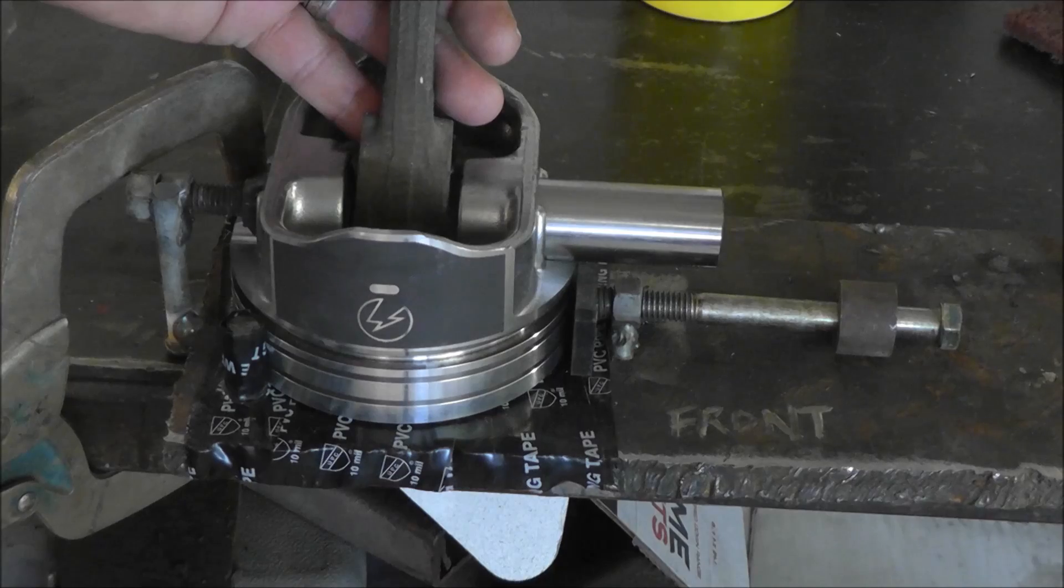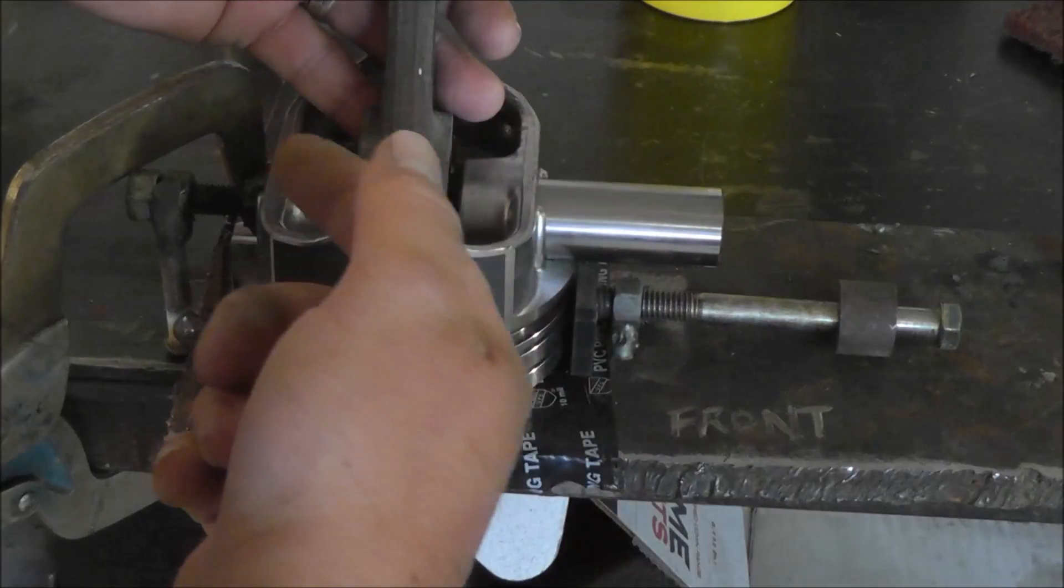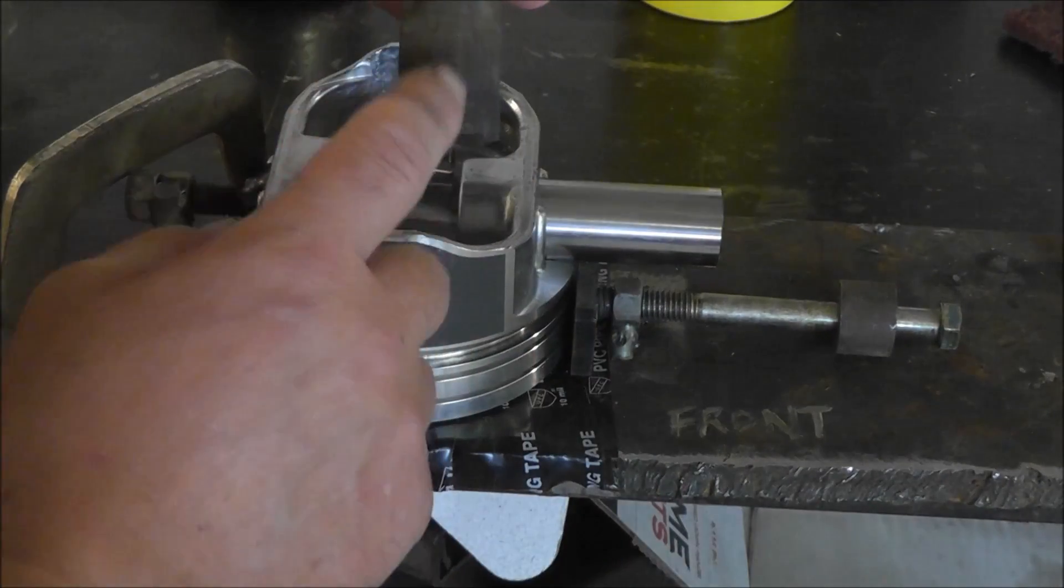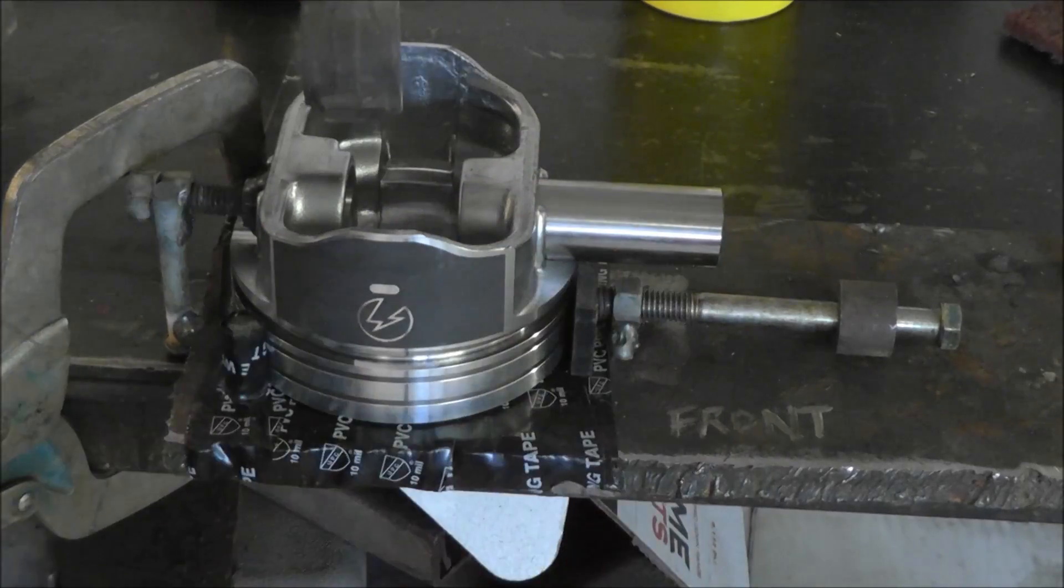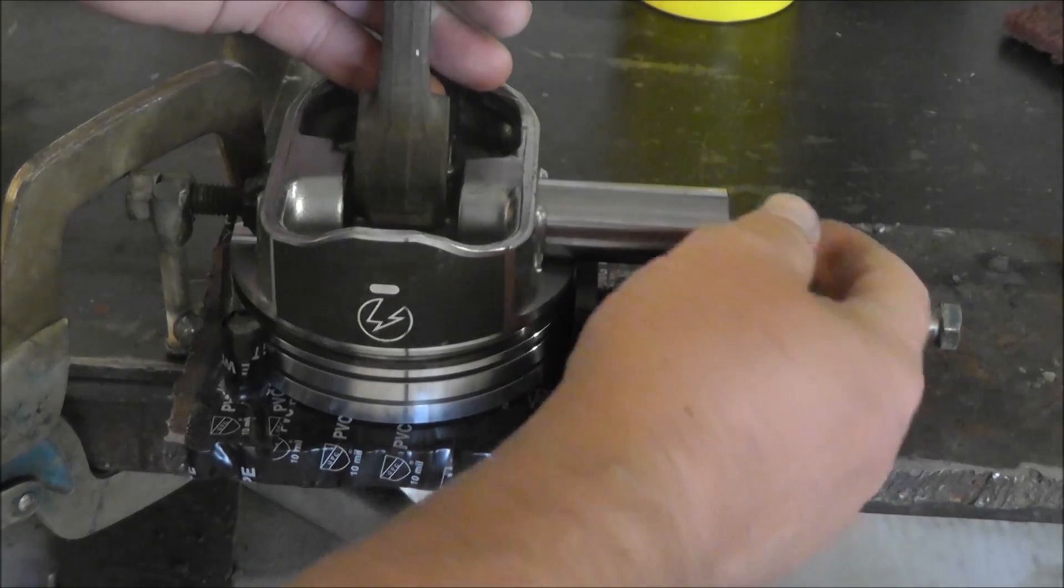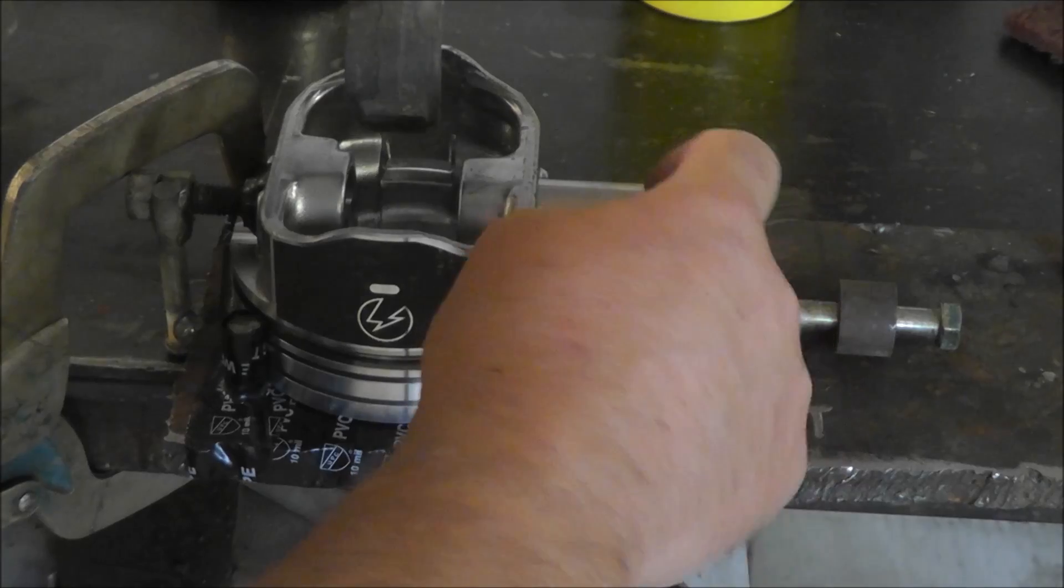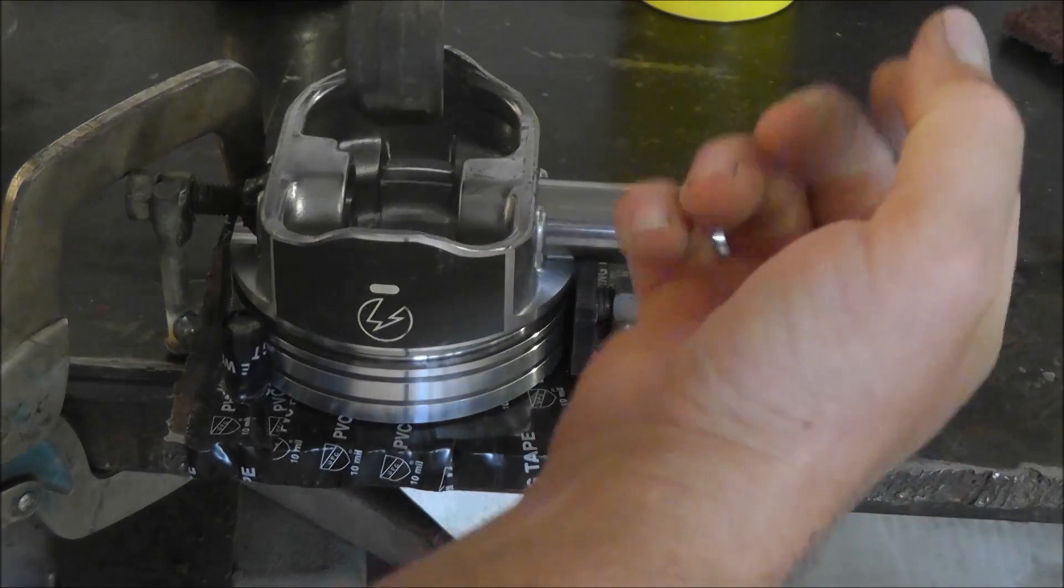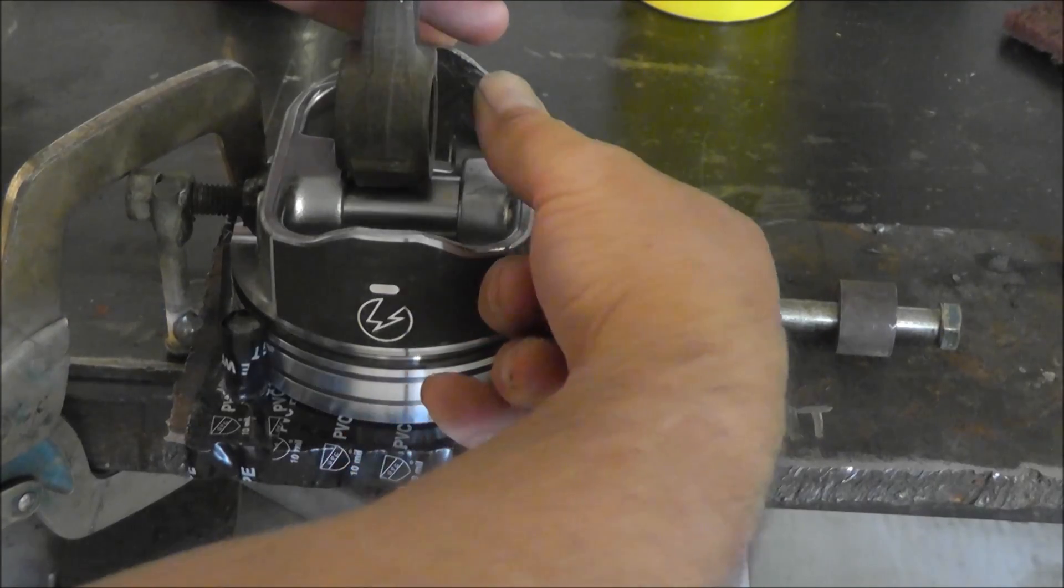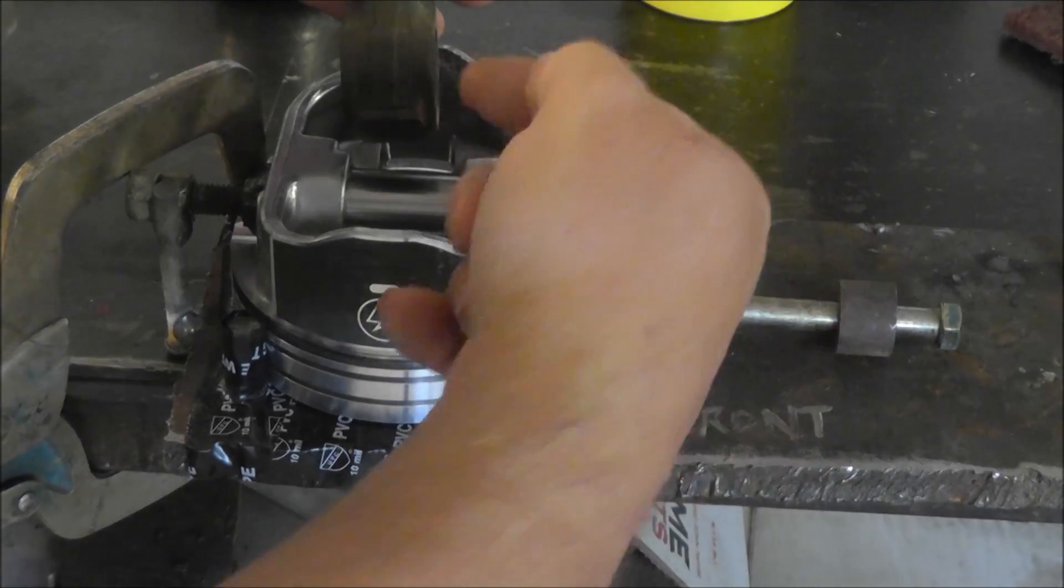You've got maybe two or three seconds maximum to get this thing in place. I'm going to show you how this is done, but essentially you've got to heat up the big end. I got these wrist pins in the freezer, they've been there for a month. So when you push these in, you heat this end up, it expands, you put this in the freezer, it constricts, you push the thing all the way in.